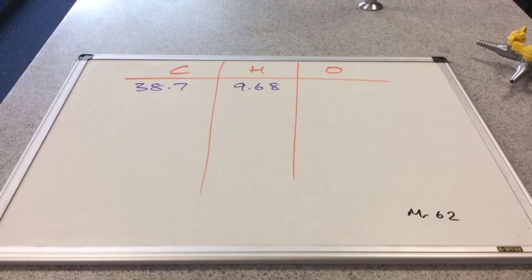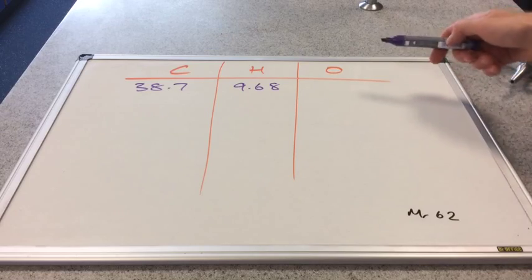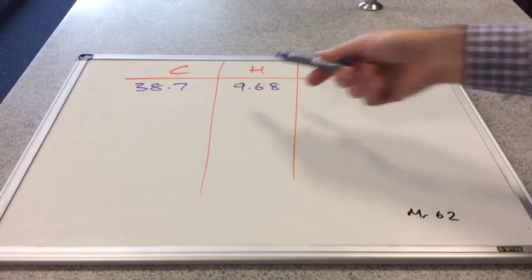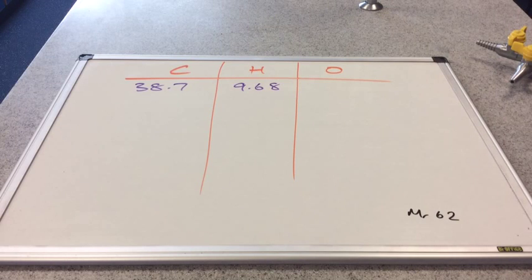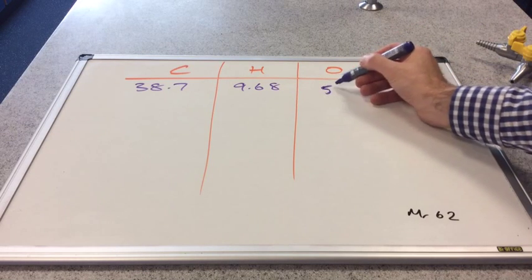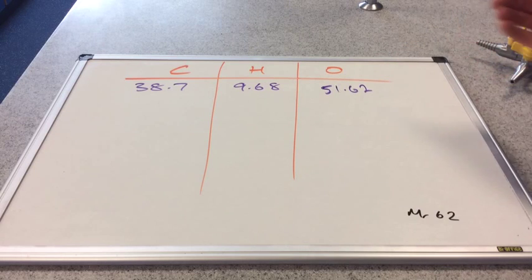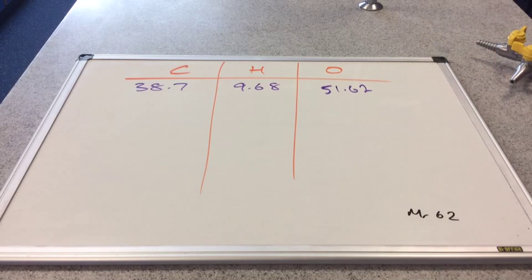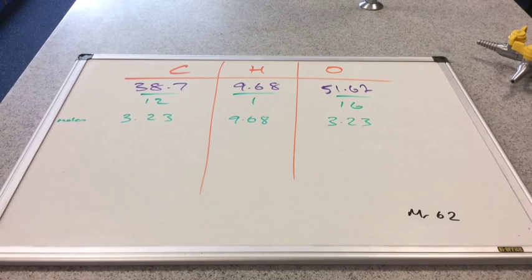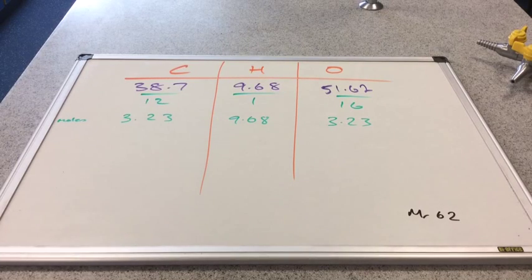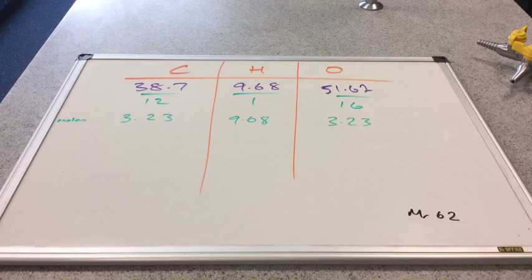So it's obviously going to be 100% minus these. So these add up to 48.38%. So 100 minus that is 51.62%. So that would obviously be the first mark if this was an exam question. So we've divided those percentages by the MRs and we've got our moles in green there to three significant figures, 3.23, 9.68, 3.23. So remember next step, divide everything by the smallest of those numbers.